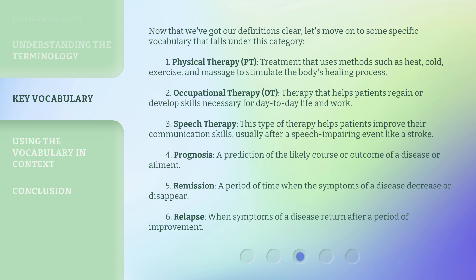1. Physical Therapy (PT): Treatment that uses methods such as heat, cold, exercise, and massage to stimulate the body's healing process. 2. Occupational Therapy (OT): Therapy that helps patients regain or develop skills necessary for day-to-day life and work. 3. Speech Therapy: This type of therapy helps patients improve their communication skills, usually after a speech-impairing event like a stroke.